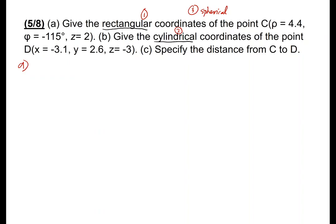Give the rectangular coordinates of point C. So you have the cylindrical — point C is given in cylindrical coordinates. RC is equal to 4.4 A-rho, plus negative 115 A-phi, plus 2 A-z. So if you want to express this in rectangular form in terms of AX, AY, and AZ, we need to get those values.